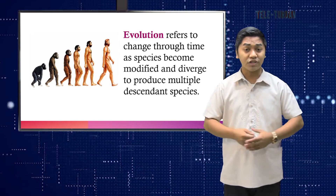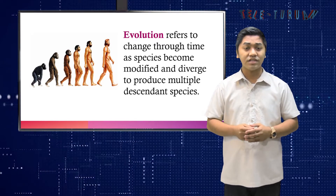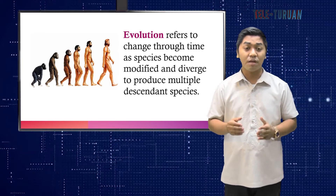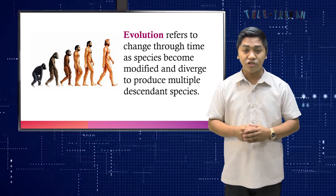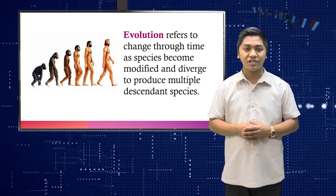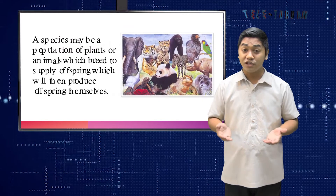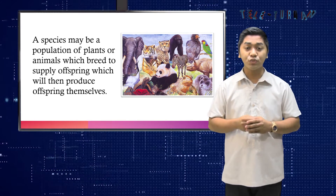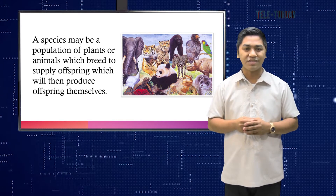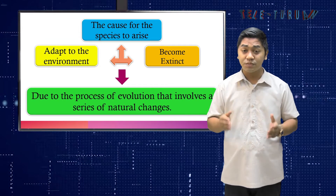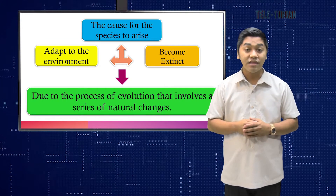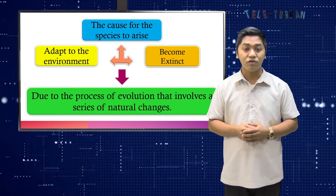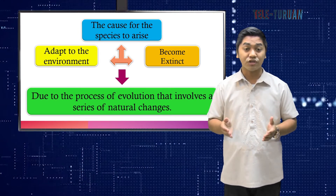What is evolution? According to Jonathan Lousas, evolution refers to change through time as species become modified and diverge to produce multiple descendant species. A species may be a population of plants or animals which breed to supply offspring which will then produce offspring themselves. The cause for the species to arise and adapt to the environment is due to the process of evolution.